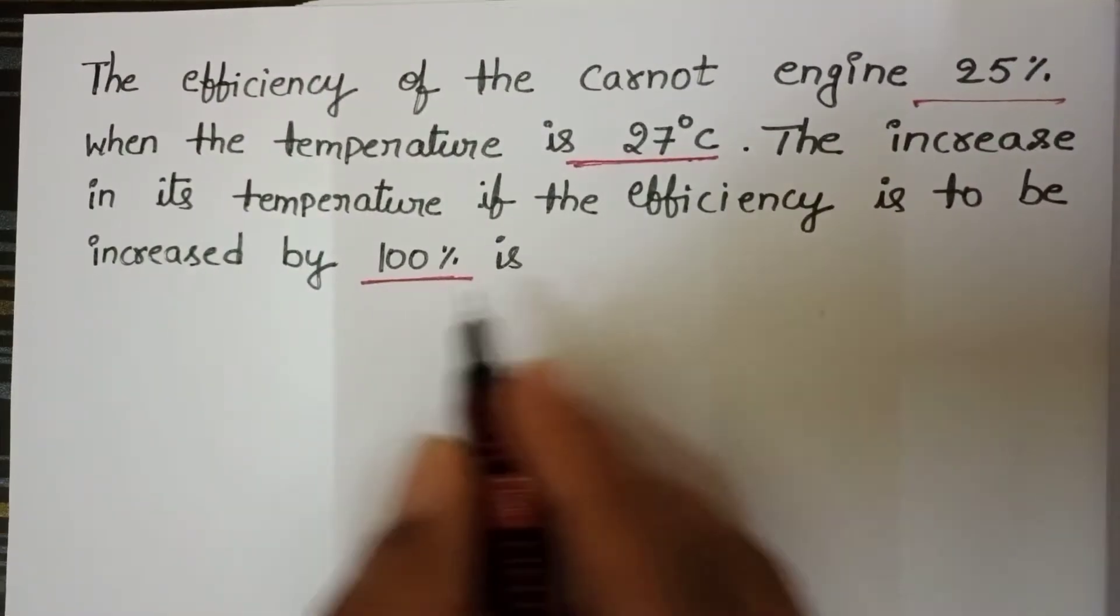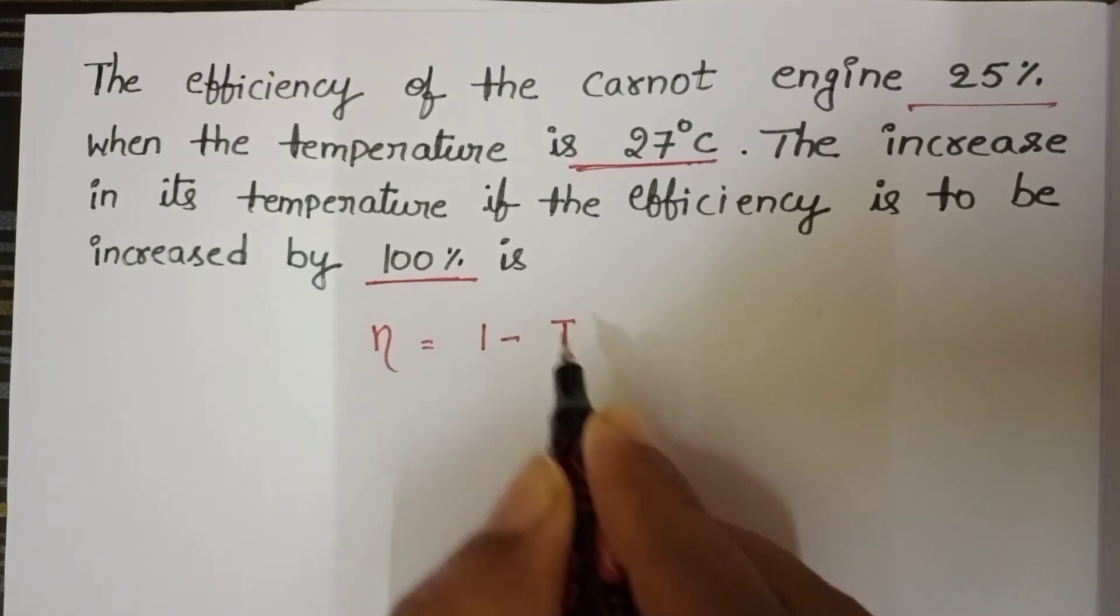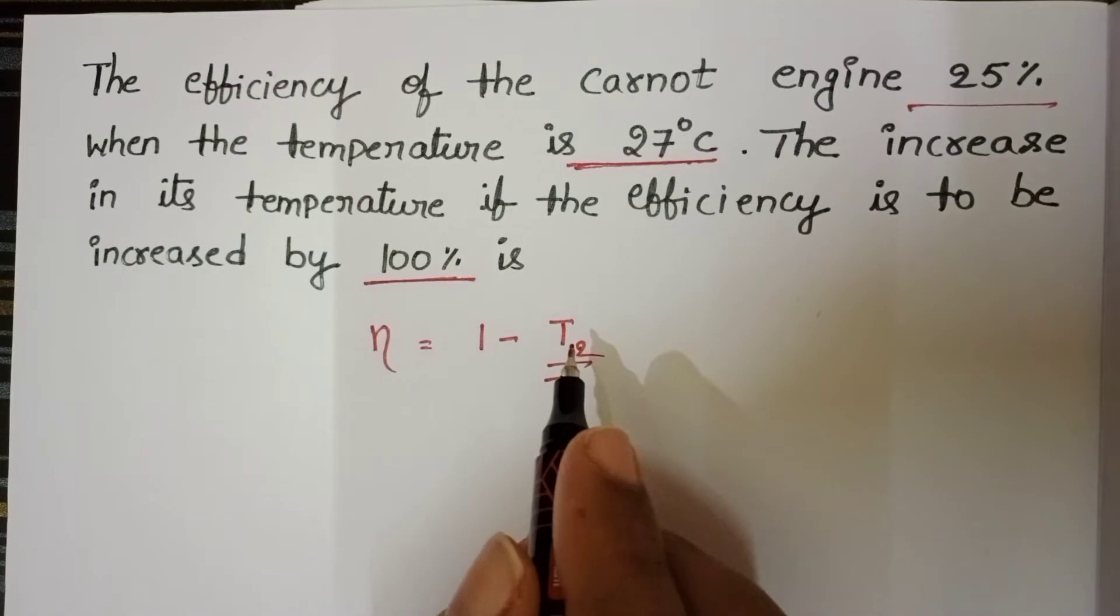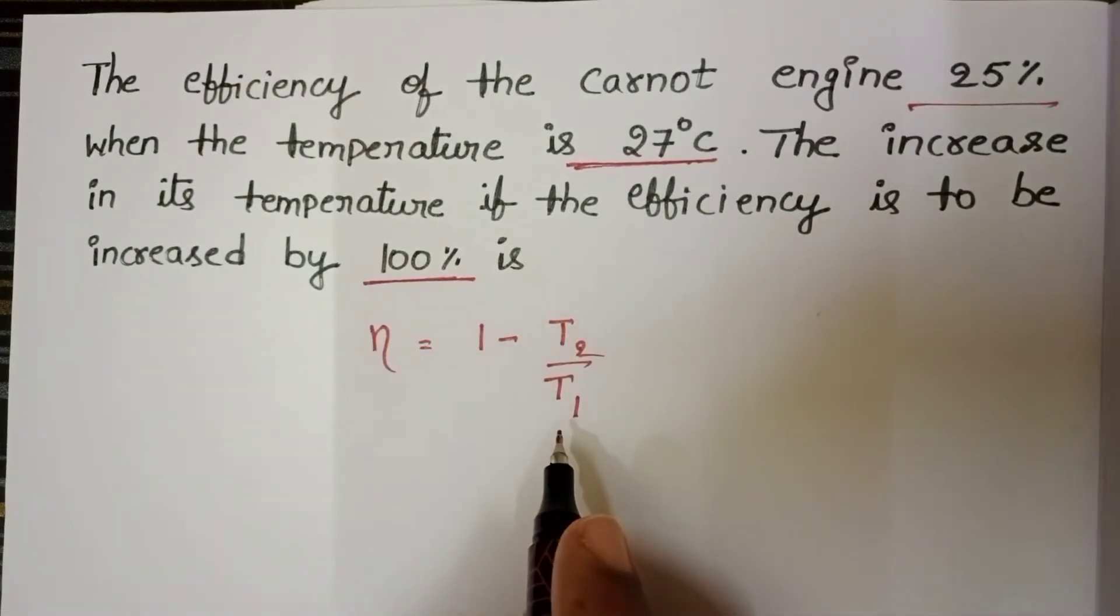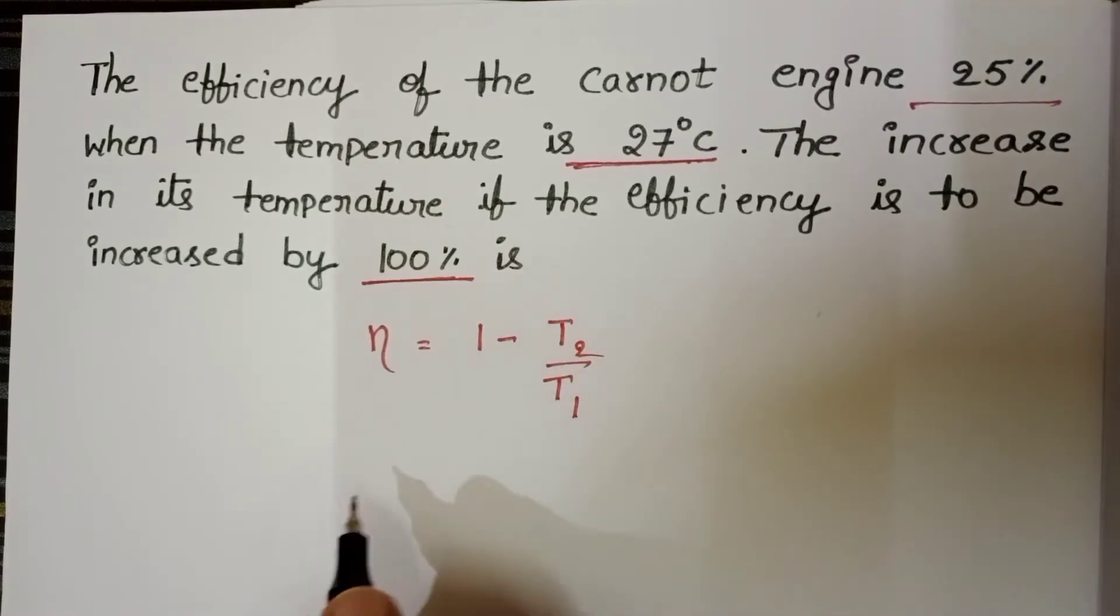We know the efficiency formula. Efficiency equals 1 minus T2 by T1. T2 is temperature of sink, means lower temperature, and T1 is temperature of the source. Source is at higher temperature.